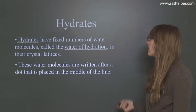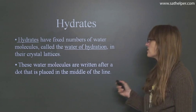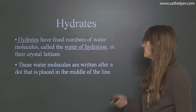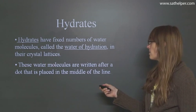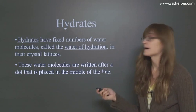Hydrates. Hydrates have fixed numbers of water molecules called the water of hydration in their crystal lattices. So when you have a chemical formula but there's water involved, you're going to include this by writing the water molecules afterwards with a dot that's placed in the middle. So let's see what this looks like.